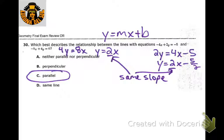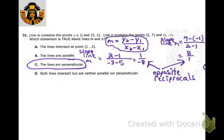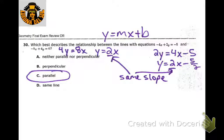To know what the relationship is between the lines, we have to put them into slope-intercept form first. Once we do, we'll be able to compare the slopes. We can tell they're both 2, so the lines are parallel.